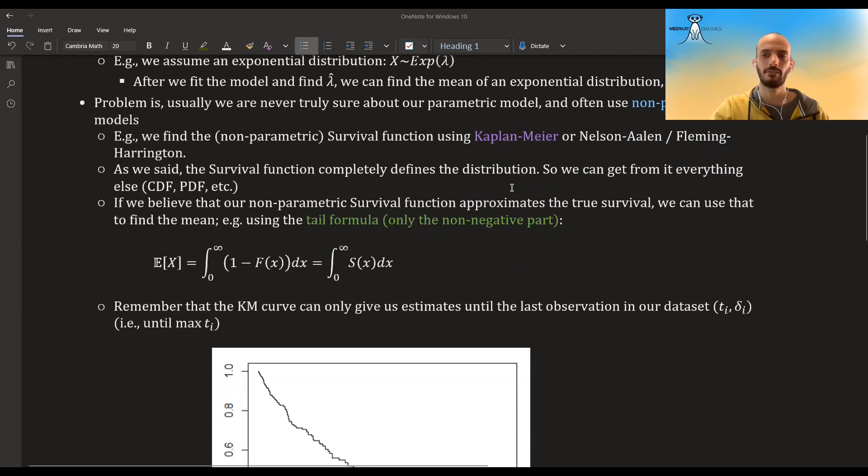And so if we believe that our Kaplan-Meier curve approximates the true survival, then we can use that to find the mean, for example using the tail formula. Since our variable here is time, it's non-negative, we can only use the non-negative part, but this is exactly the survival, so basically it's just the integral of the survival curve. The problem is with Kaplan-Meier that it only goes until the last data point that you have.